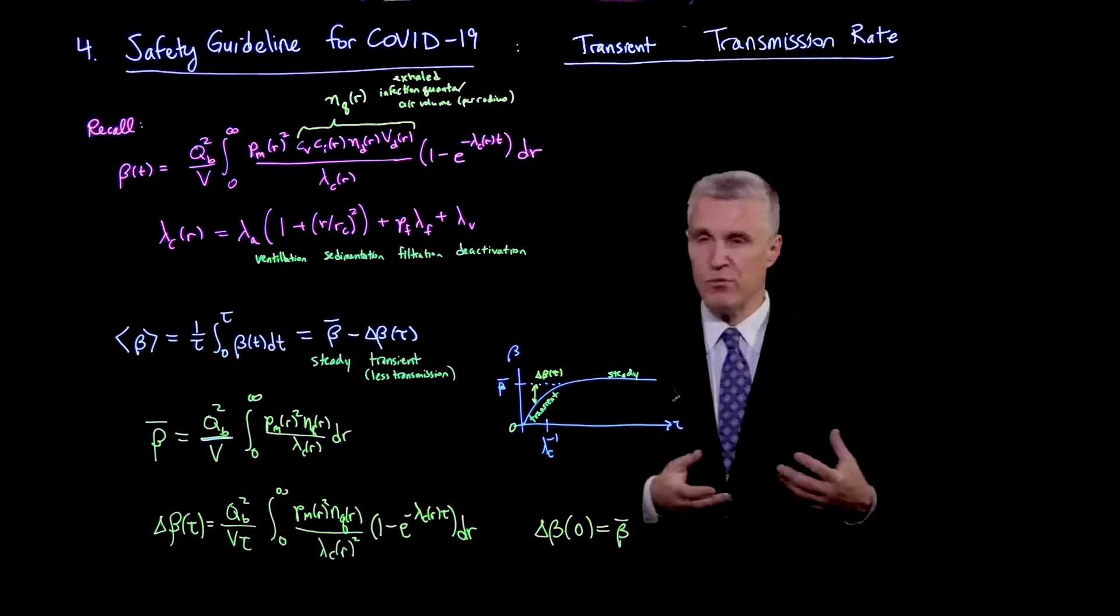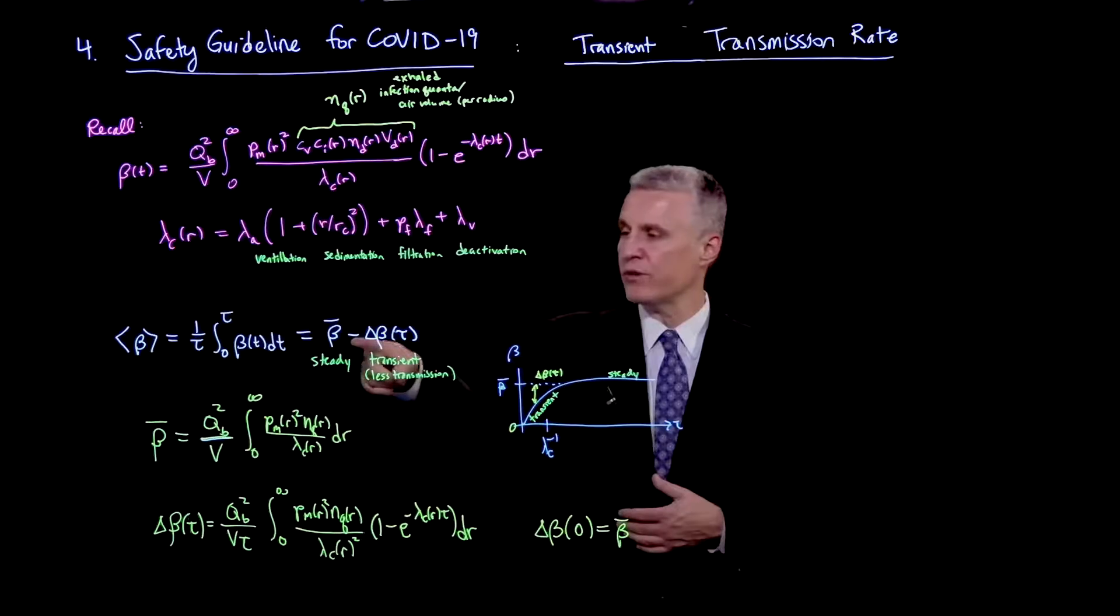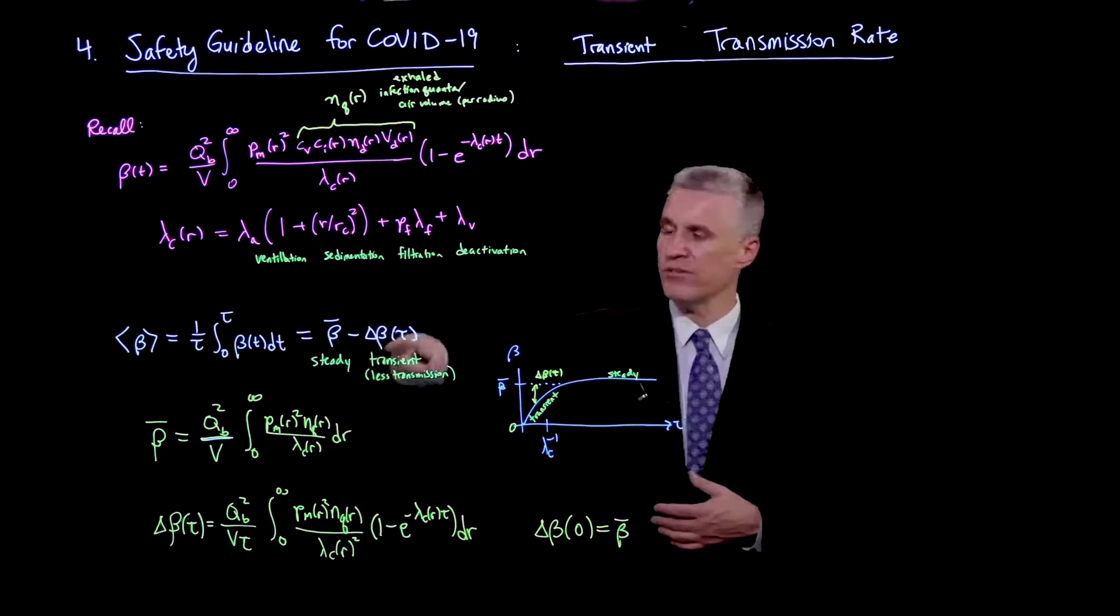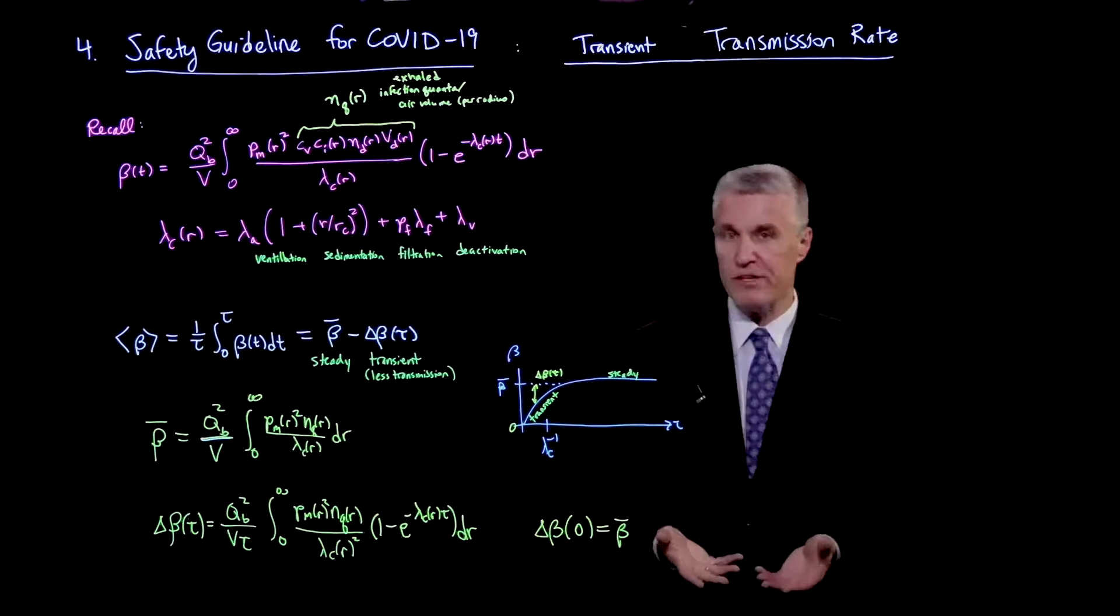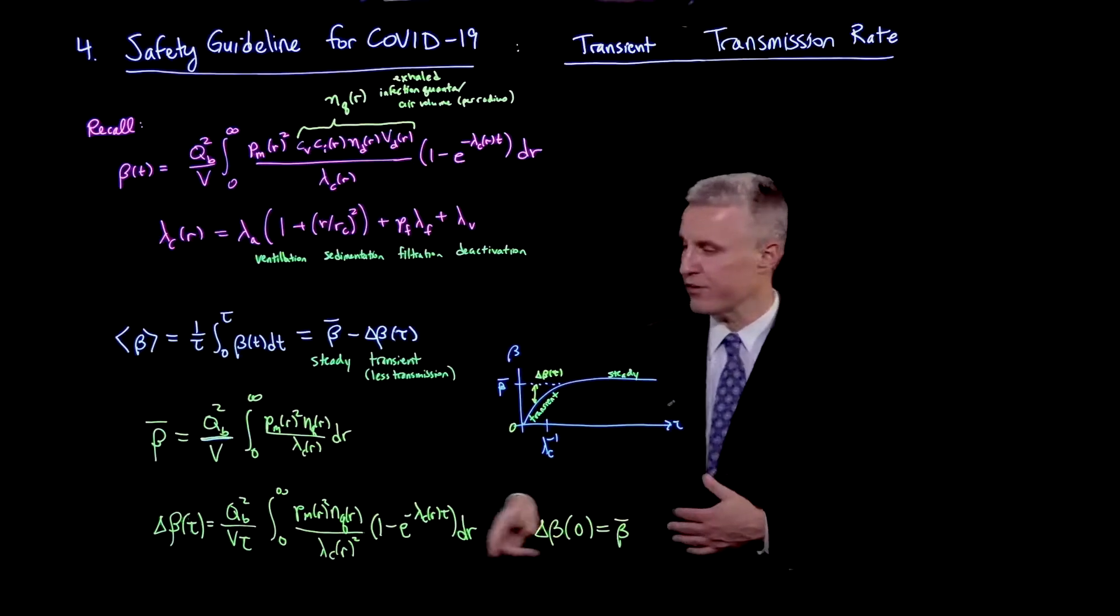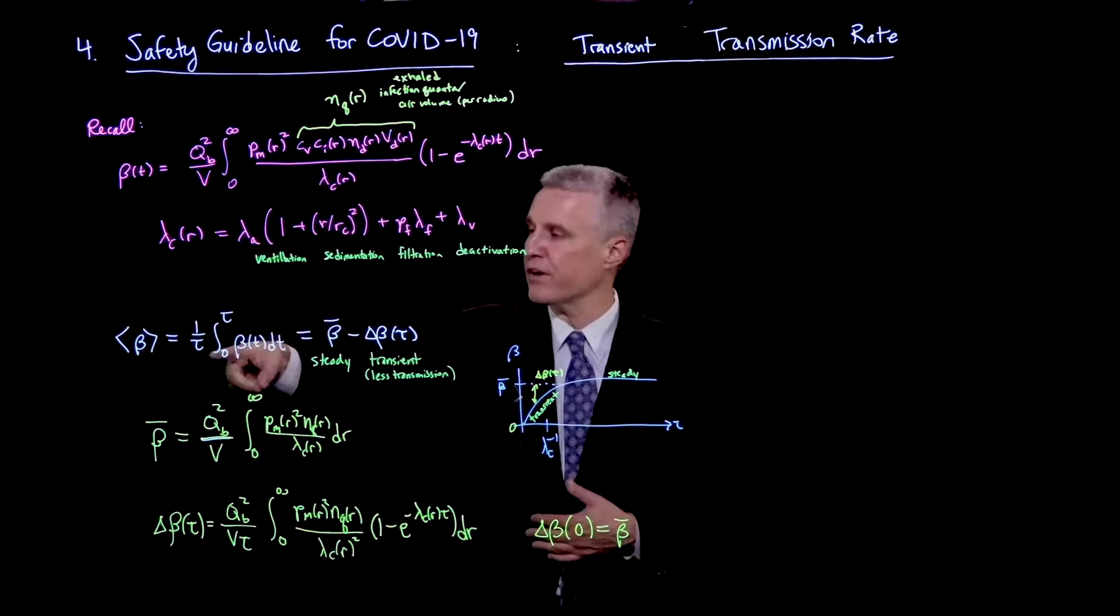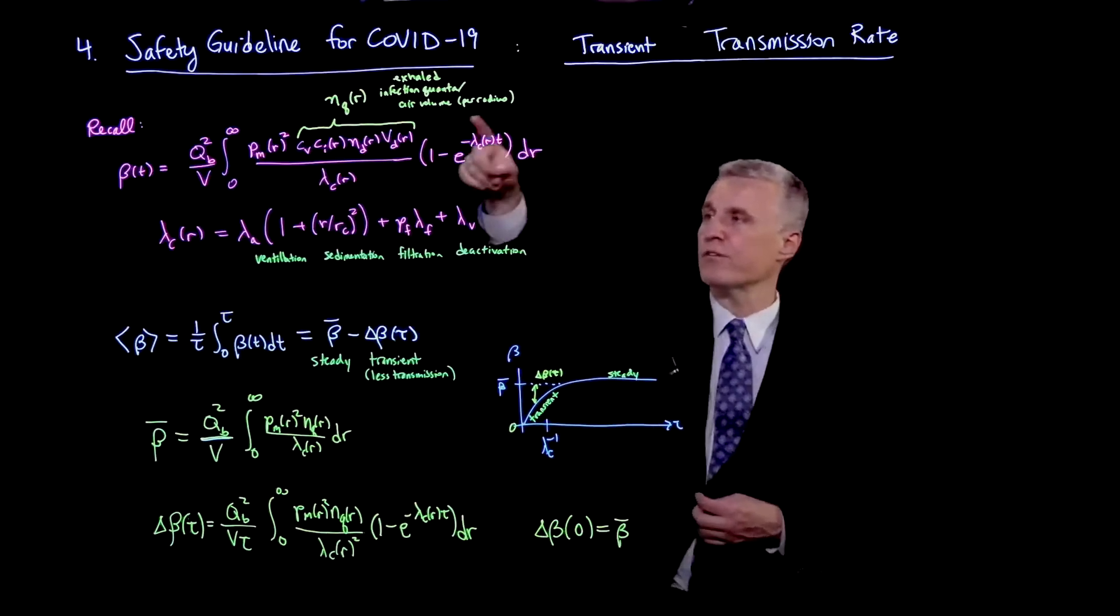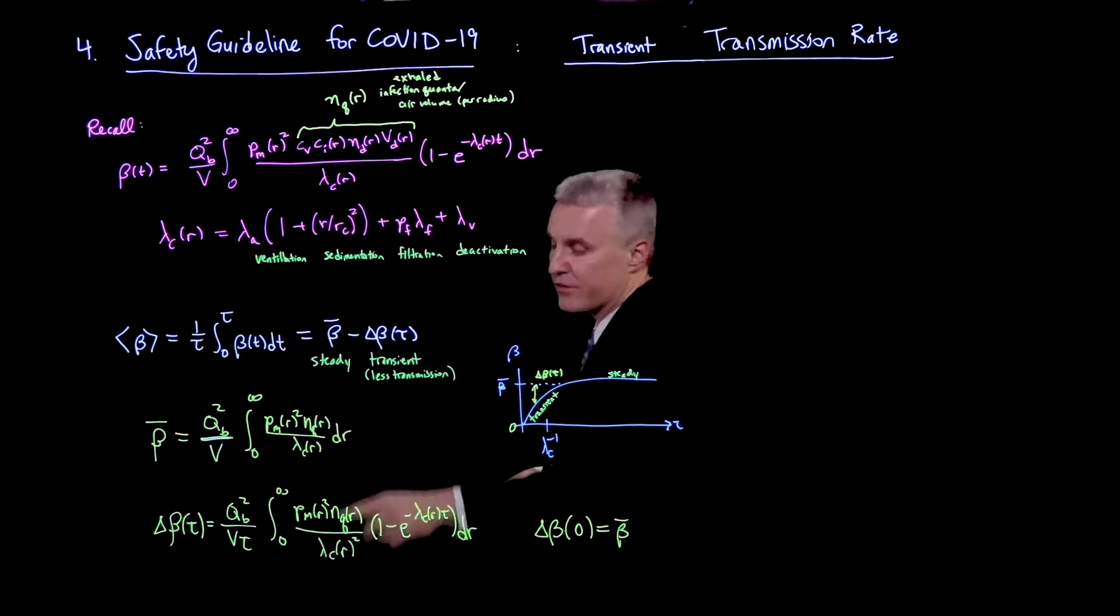But initially, when the infected person first walks in the room, there's a time to build up the concentration, which only lowers the transmission rate. So the average transmission rate is always less than the steady state. You're approaching the steady state from below because you need the time to build up those droplets. And so the delta beta here, which is that correction, takes the following form. What you can do is bring the integral over time and switch places with the integration over r and do the time integral inside the integral.